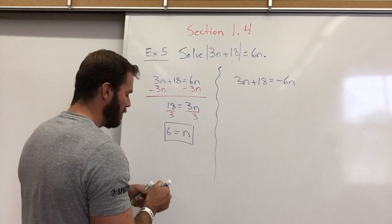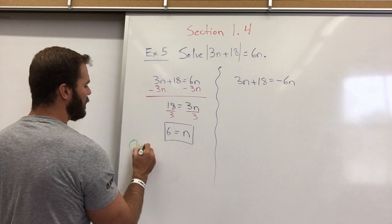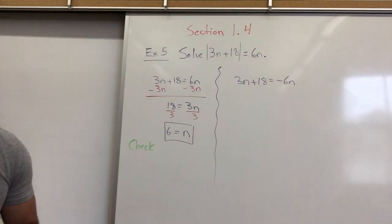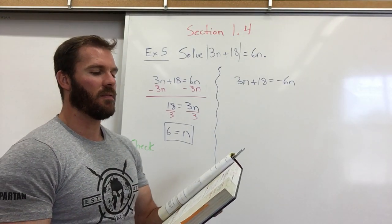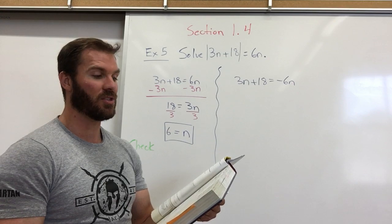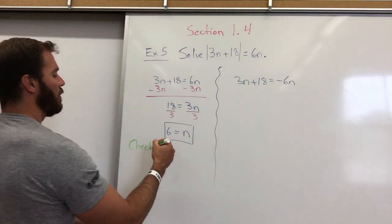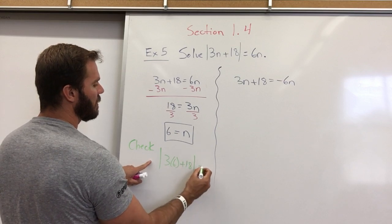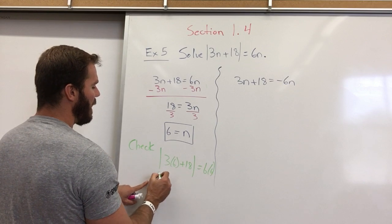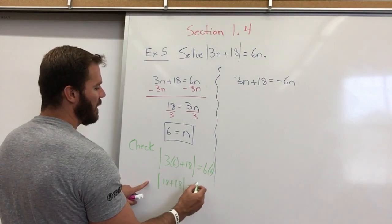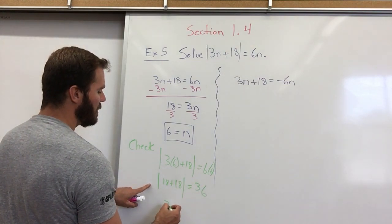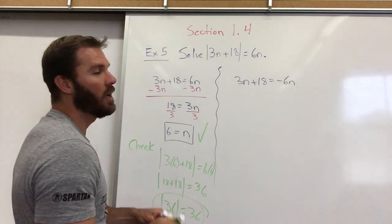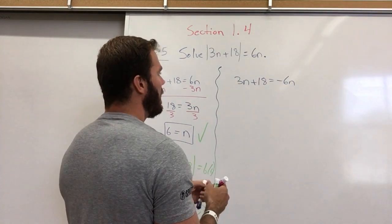Now I can make sure this is correct by checking my answer. I'm going to plug n=6 into the original equation. Absolute value of 3 times 6 plus 18 equals 6 times 6 — that's absolute value of 36 equals 36. The absolute value of 36 is 36, so yes, that one checks out.